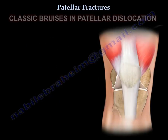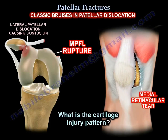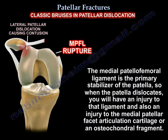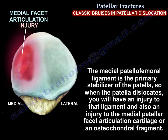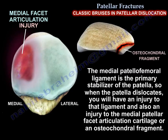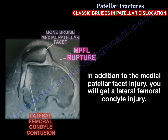One of them is the classic bruises in patellar dislocations. What is the cartilage injury pattern? We know that the medial patellofemoral ligament is the primary stabilizer of the patella. So when the patella dislocates, you will have an injury to that ligament and injury to the medial patellar facet articular cartilage. You may get an osteochondral fragment, and in addition you get a lateral condyle injury.